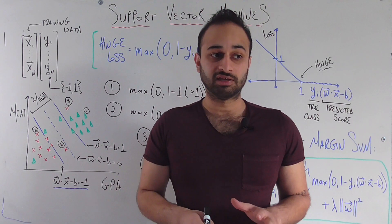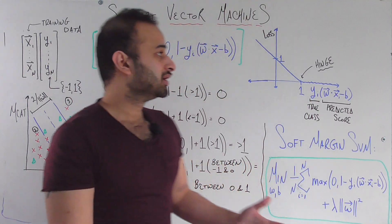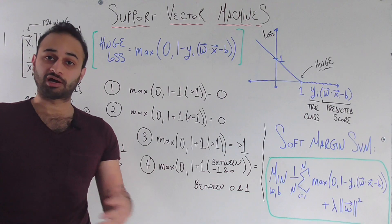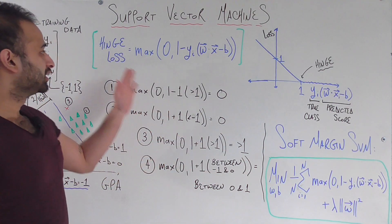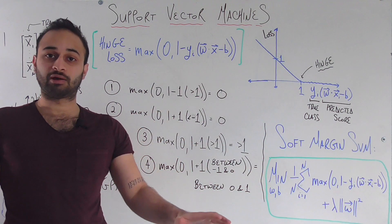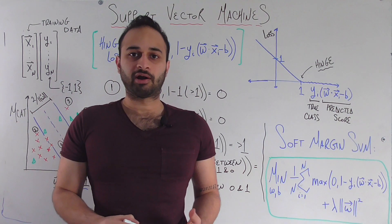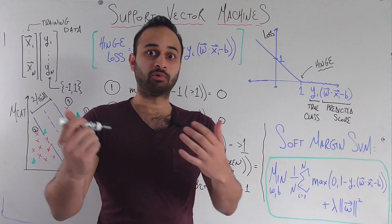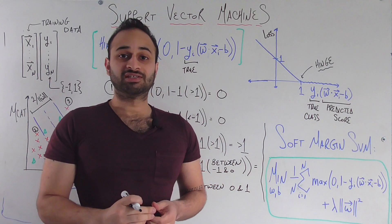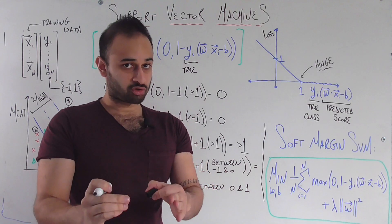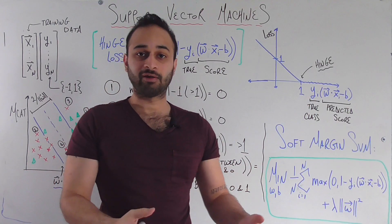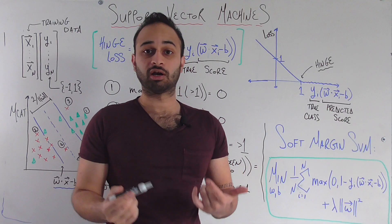The driving force behind soft margin SVM is the hinge loss — one of the loss functions I covered in my loss functions video. The hinge loss equation looks like a scary mess, but let me break it down. y_i is the true class of the student — either one or negative one. The other quantity is the score: w (our weight vector) times x_i (the predictor for a given student) minus b (our intercept).